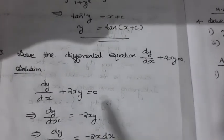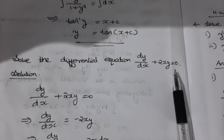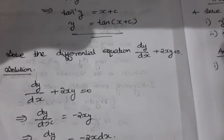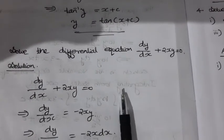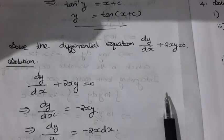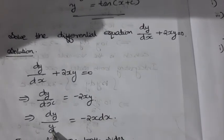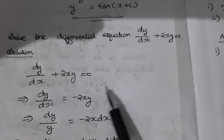Next question: solve the differential equation dy/dx + 2xy = 0. First, we separate the variables. That is, dy/dx = −2xy. Then y terms are on one side and x terms are on the other side, giving dy/y = −2x · dx.